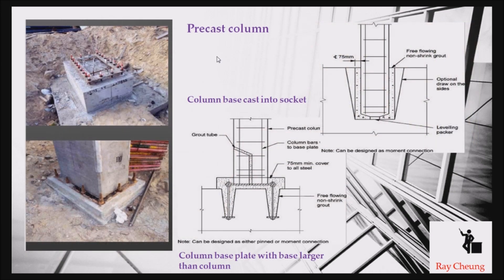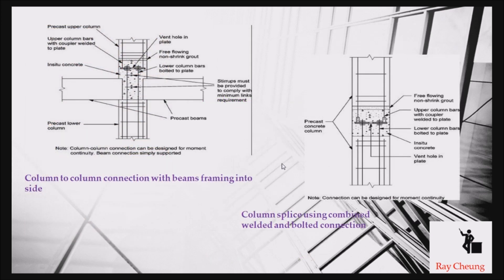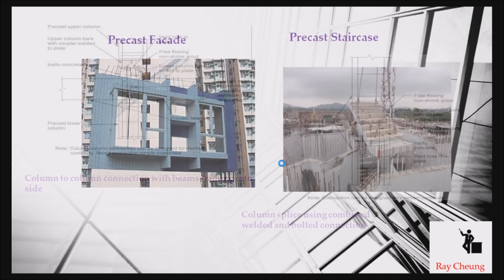This is another type of precast column. You can see only a little portion needs to be concreted, and then we can connect two columns together. This is another detail I'm showing you.